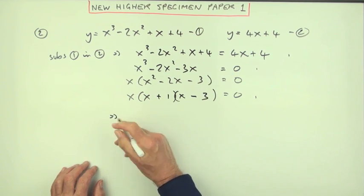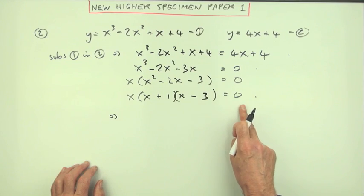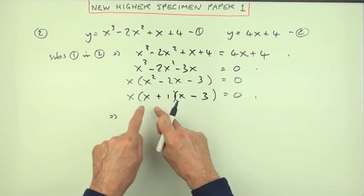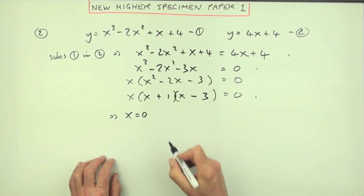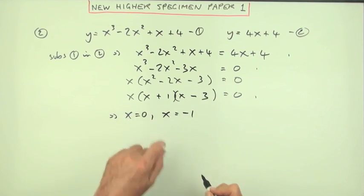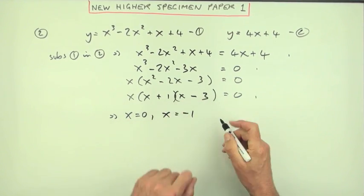Now just state the values that satisfy that. If these things multiply to give zero, then any one of them could have been the culprit. Which one of you is zero? Well, you could be zero, or that bracket could be zero in which case x would be negative one, or that bracket could be zero in which case x would be three. That's the next mark.